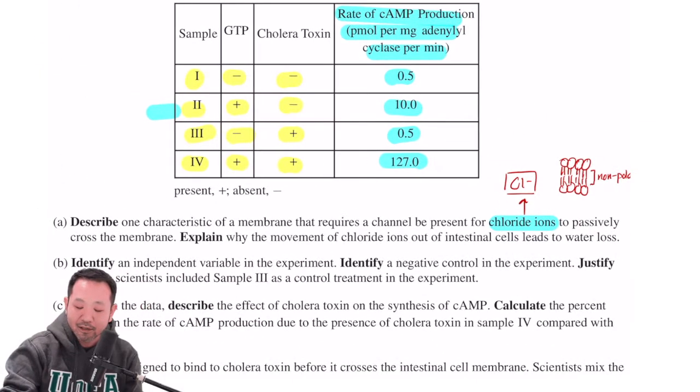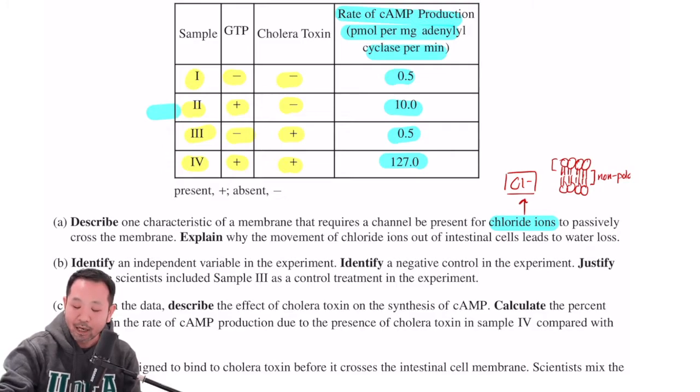we have learned that the phospholipid bilayer has a non-polar lipid region in between. And as such, polar or charged substances like chloride ions are not going to want to cross through the non-polar area, even if it's moving from an area of high to low concentration.